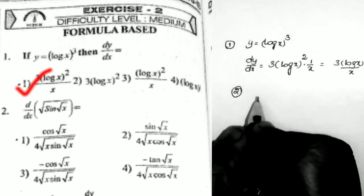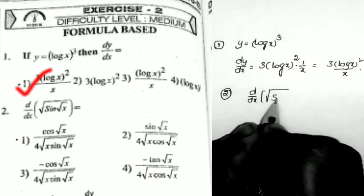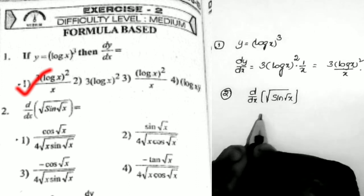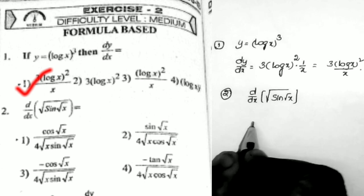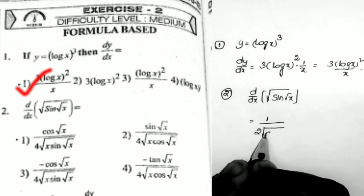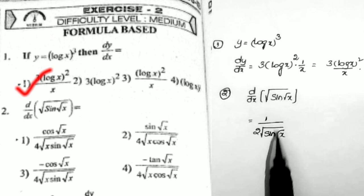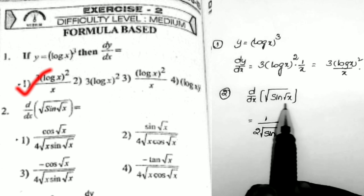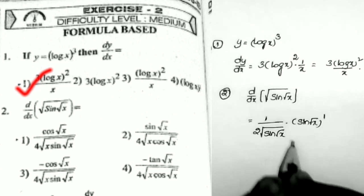The second question is: d/dx of sin(√x). We want the derivative of this function. This is in the form of √x, and d/dx of √x is 1/(2√x). So the answer begins as 1/(2√(sin√x)). This is in the form of √x, and the derivative of √x is 1/(2√x). In place of x here, we have sin(√x), so again we take the derivative of sin(√x).